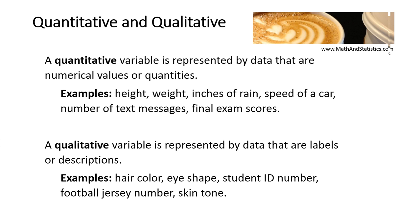A variable is going to be either quantitative or qualitative in nature. Quantitative variables are represented by data that are actual numerical values or quantities, such as height, weight, inches of rain, speed of a car, number of text messages, and final exam scores. Qualitative variables are represented by data that are labels, descriptions, qualities, or categories — such as hair color, eye shape, student ID number, football jersey number, and skin tone.